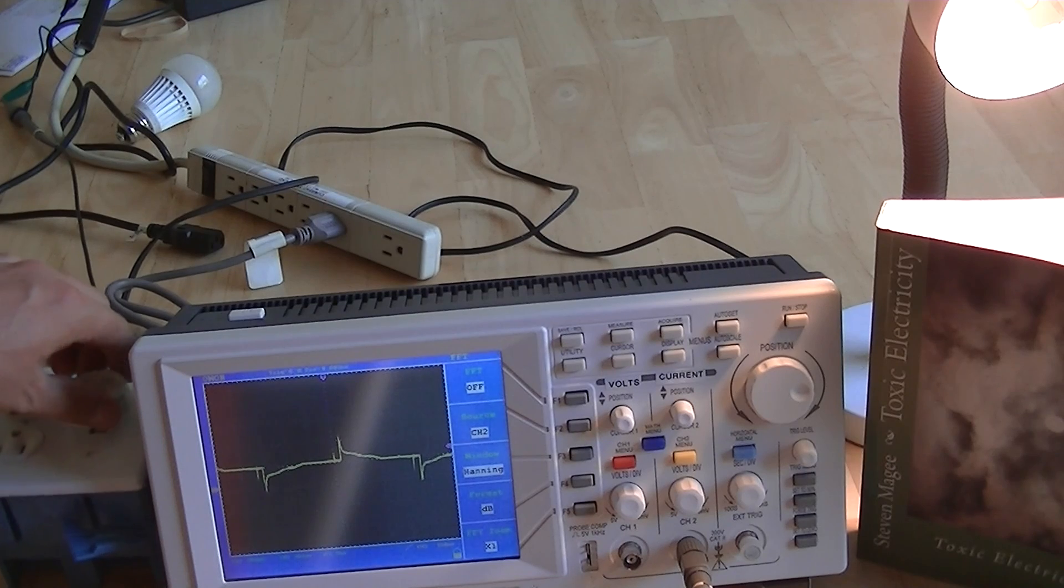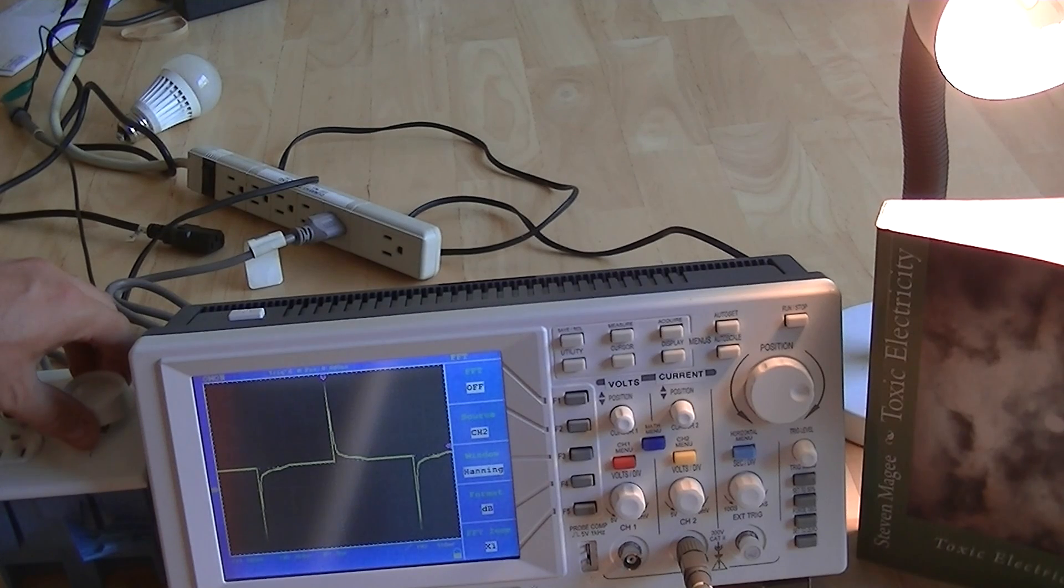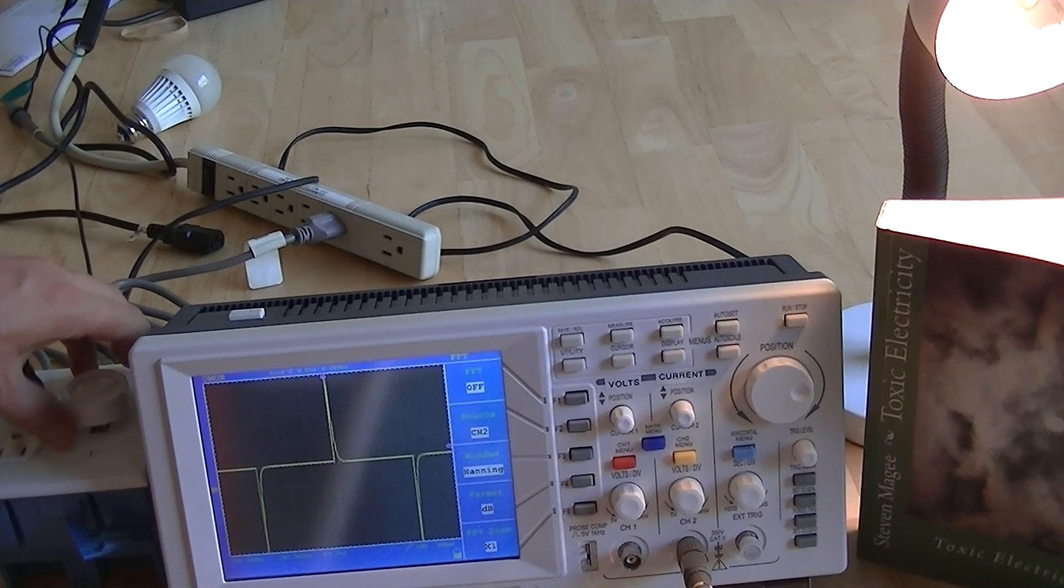So let's vary our brightness. So we're on full brightness right now. We're going to take it down. So you can see that the waveform really gets very large current spikes on it.